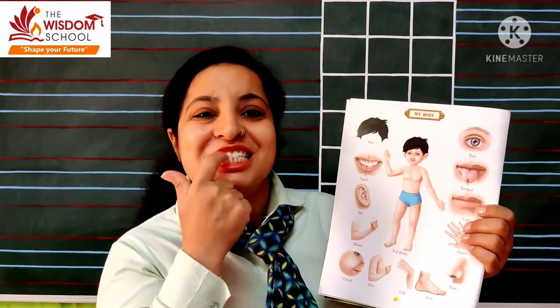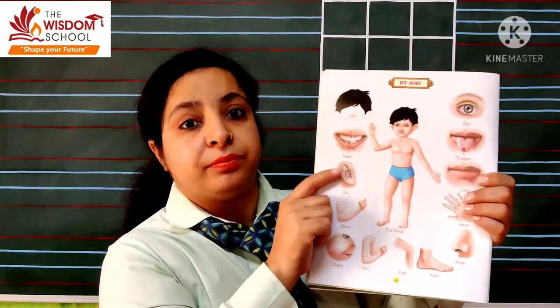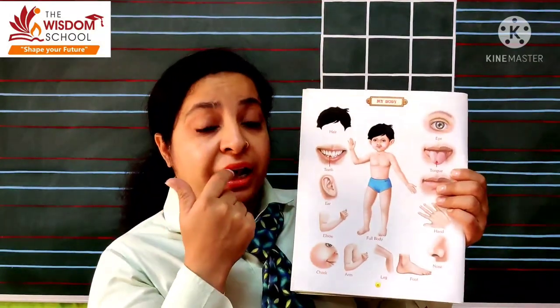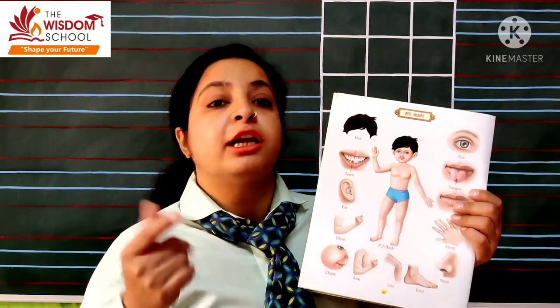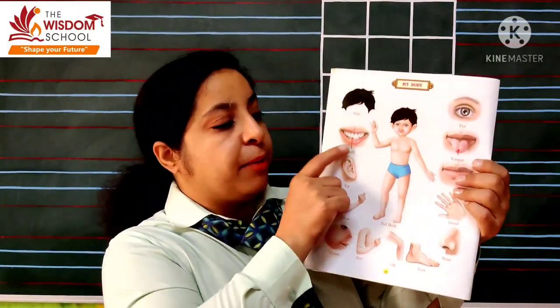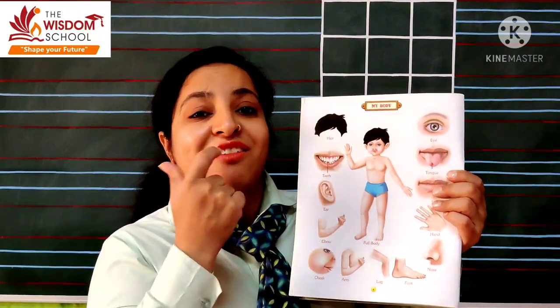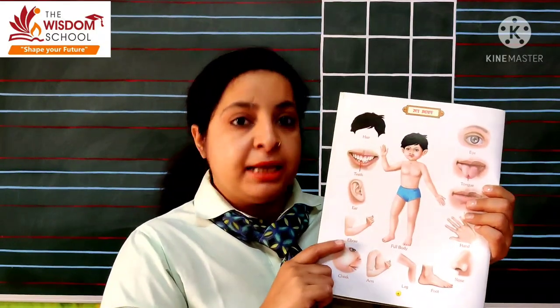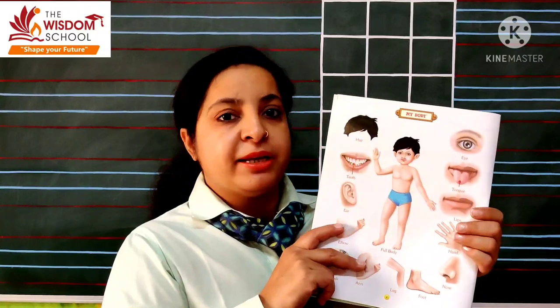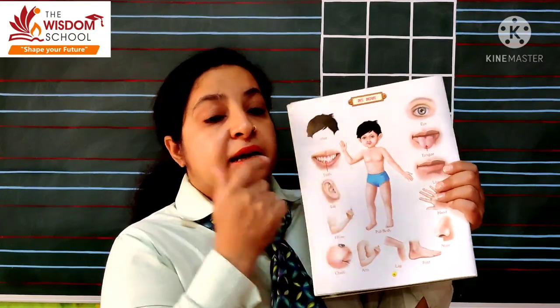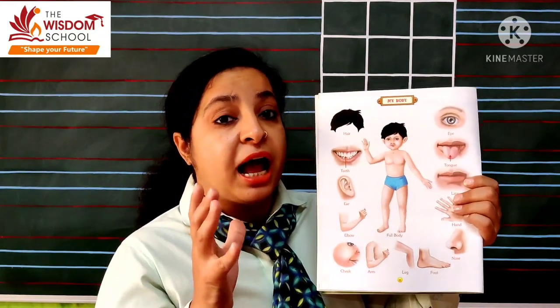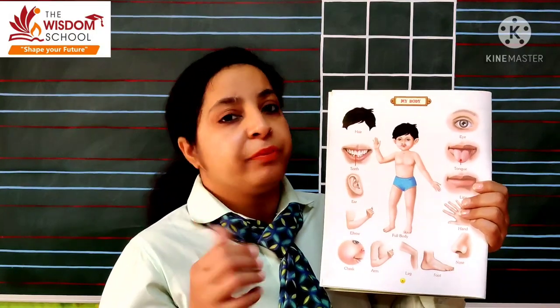Next dekho yeh kya hai? Yeh hote hain teeth. Kya hai? Teeth. Hum apna khaana karte hain na, hum bite karte hain — teeth se bite karte hain, teeth se apna khaana khaate hain. Phir usko chew karte hain, phir hum hamare stomach mein jaata hai. Toh yeh hain hamari teeth. Teeth ka color kya hota hai? White. Aap brush karte ho na teeth pe? Daily brush karo — two times brush karna chahiye, okay? Teeth — color kya hai iska? White. Isse hum kya karte hain? Bite karte hain, kaatte hain. Clear.